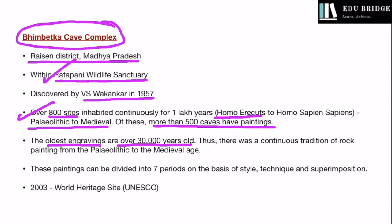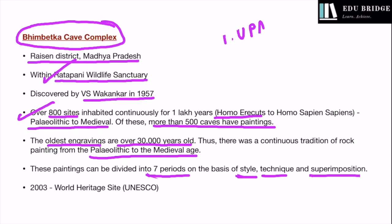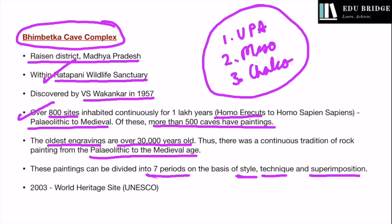The oldest engravings at Bhimbetka are more than 30,000 years old, and there was a continuous tradition of rock painting from the Paleolithic up to the medieval age. On the basis of their style, technique, and superimposition, the paintings at Bhimbetka have been divided into 7 periods. The first is the Upper Paleolithic, the second is the Mesolithic, and the third is the Chalcolithic. The remaining 4 periods belong to the historical phase. In 2003, Bhimbetka was declared a World Heritage Site by UNESCO.